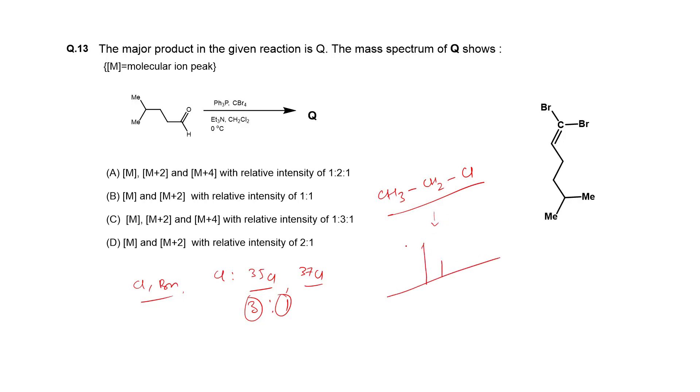Likewise, if we have any bromo compound attached with any chain, then for the bromine case, two isotopes are 79-Br and 81-Br. Both natural abundances are 49% and 51%, meaning a 1 is to 1 ratio. For this case, we will have a 1 is to 1 ratio.